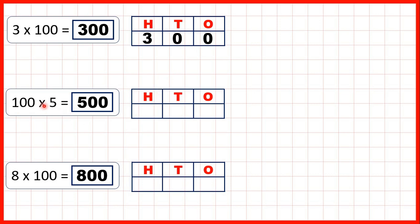For 100 times 5, we can write 5 in our ones, but then to multiply it by 100 we're moving two place values to the left, and now to show that the 5 stands for five hundreds we need zeros in our tens and ones. And for 8 times 100 it's the same thing.